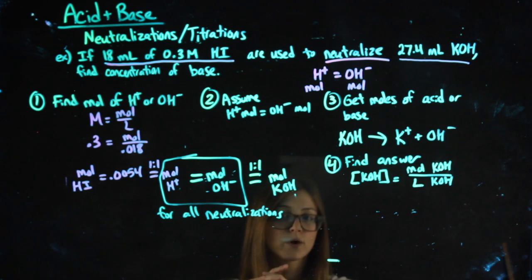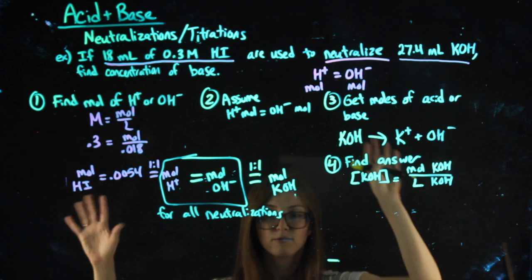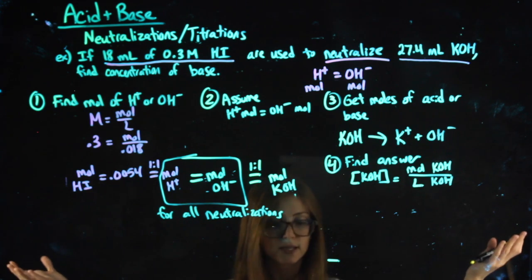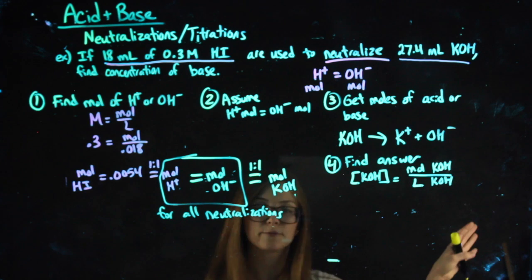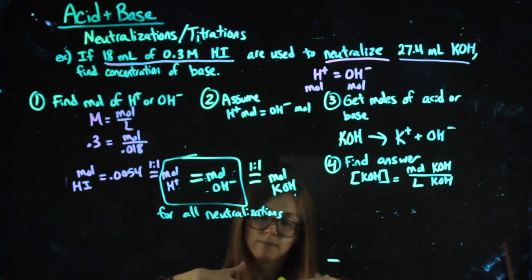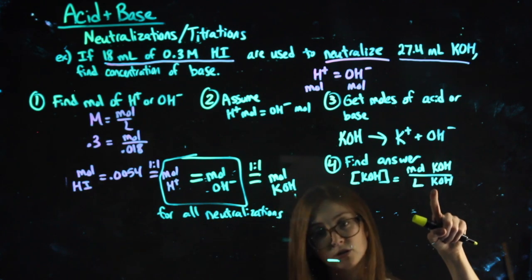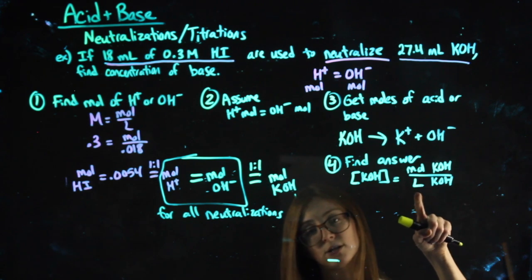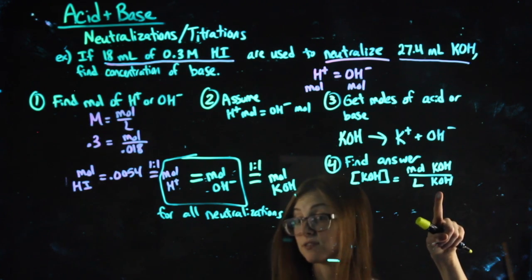What we're doing is, we're backtracking from, okay, here's my acid, here's my base. Let's rewind and see what was my base, before I combined them. So I'm not using total volume, I'm just using the liters of my KOH. That's a big difference here.